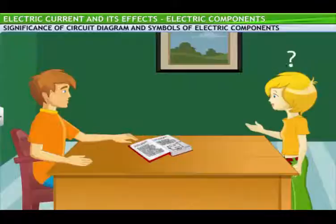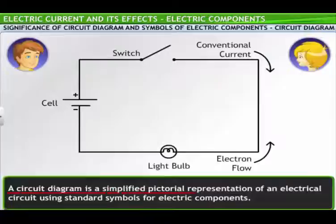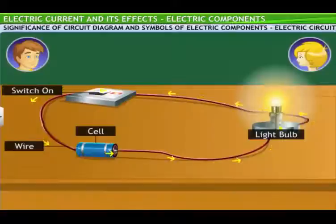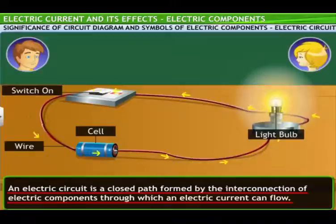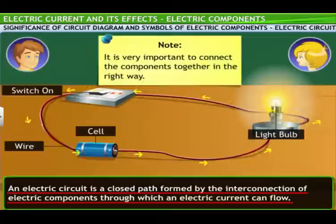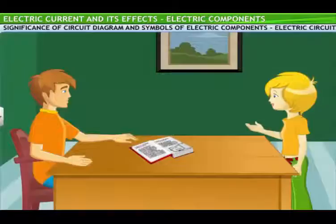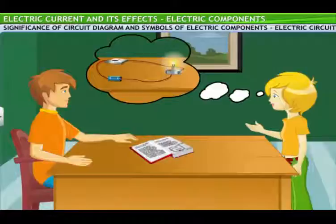So how does the diagram help you? The circuit diagram is a simplified pictorial representation of an electric circuit using standard symbols of electric components. It helps me in placing the components and connecting them in the right way to form a circuit. An electric circuit is a closed path formed by the interconnection of electric components through which an electric current can flow. So you have the basic idea of what makes up a circuit. I can identify the components when I see them in the circuit, but I can't really identify the components from the diagram.